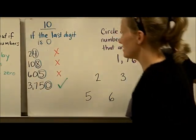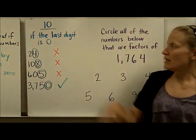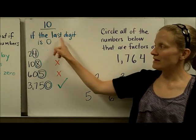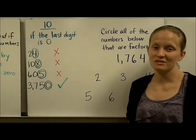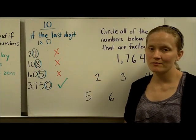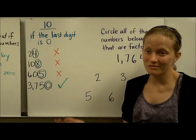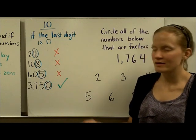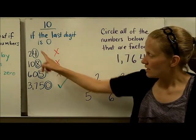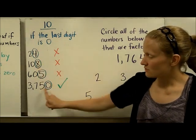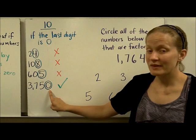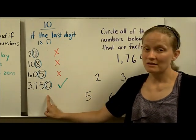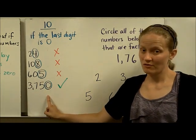Finally, another easy one. If a number is divisible by 10, then the last digit is going to be a 0. That makes a lot of sense — when we count by 10s: 10, 20, 30, 40 — they all end in 0. Looking at our list, the only number that ends in a 0 and is divisible by 10 is 3,750.